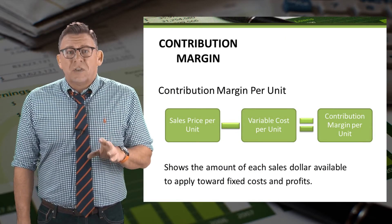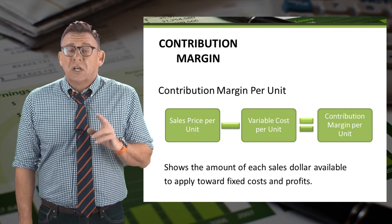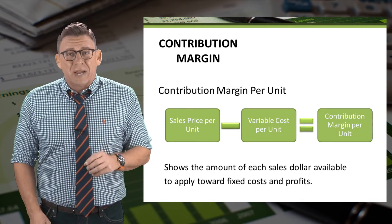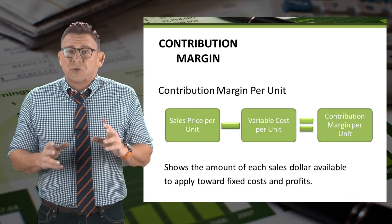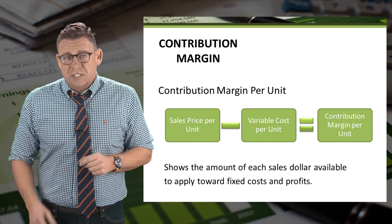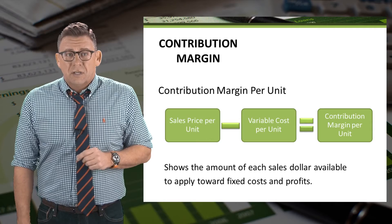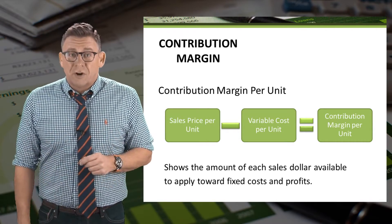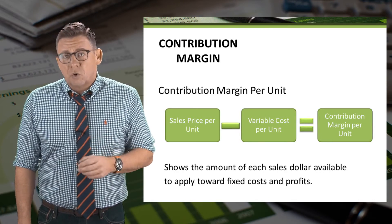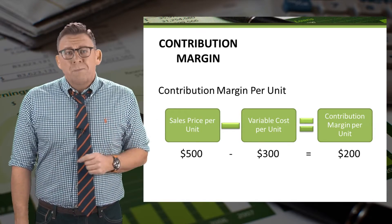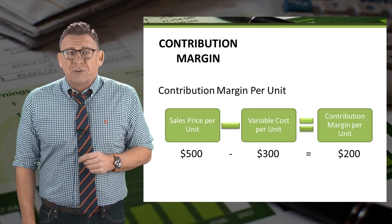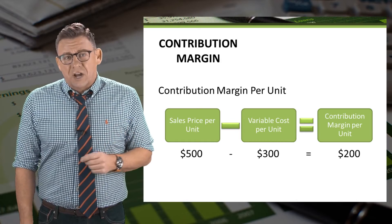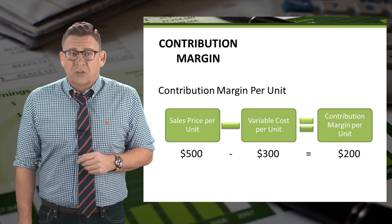Let's learn this simple yet useful concept called contribution margin per unit. It is calculated by taking the sales price per unit and subtracting the variable cost per unit. It's the amount of each sales dollar that is available to cover fixed costs and normal profits. In this example, the price per unit is $500 and the variable cost per unit is $300, thus the contribution margin is $200 per unit.